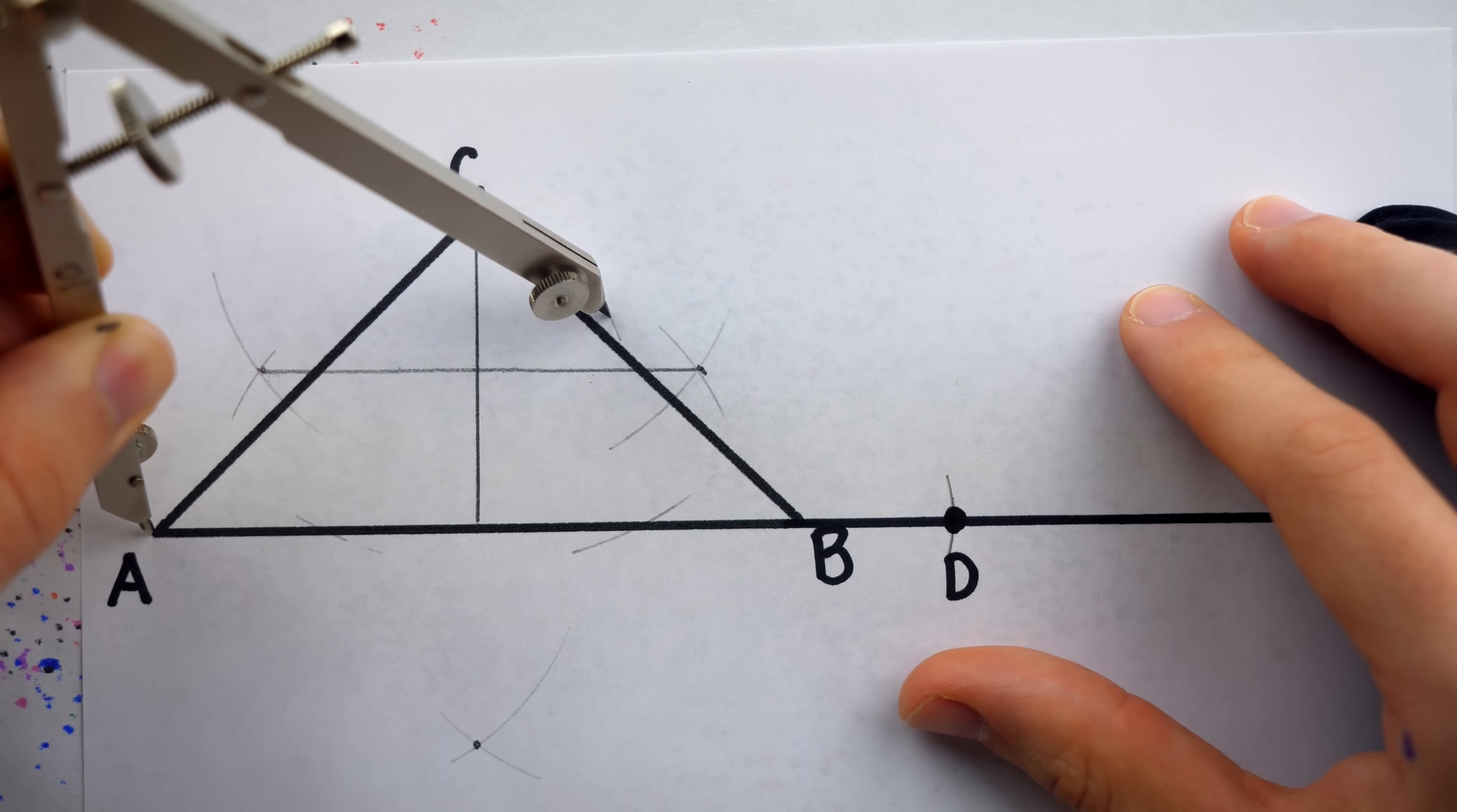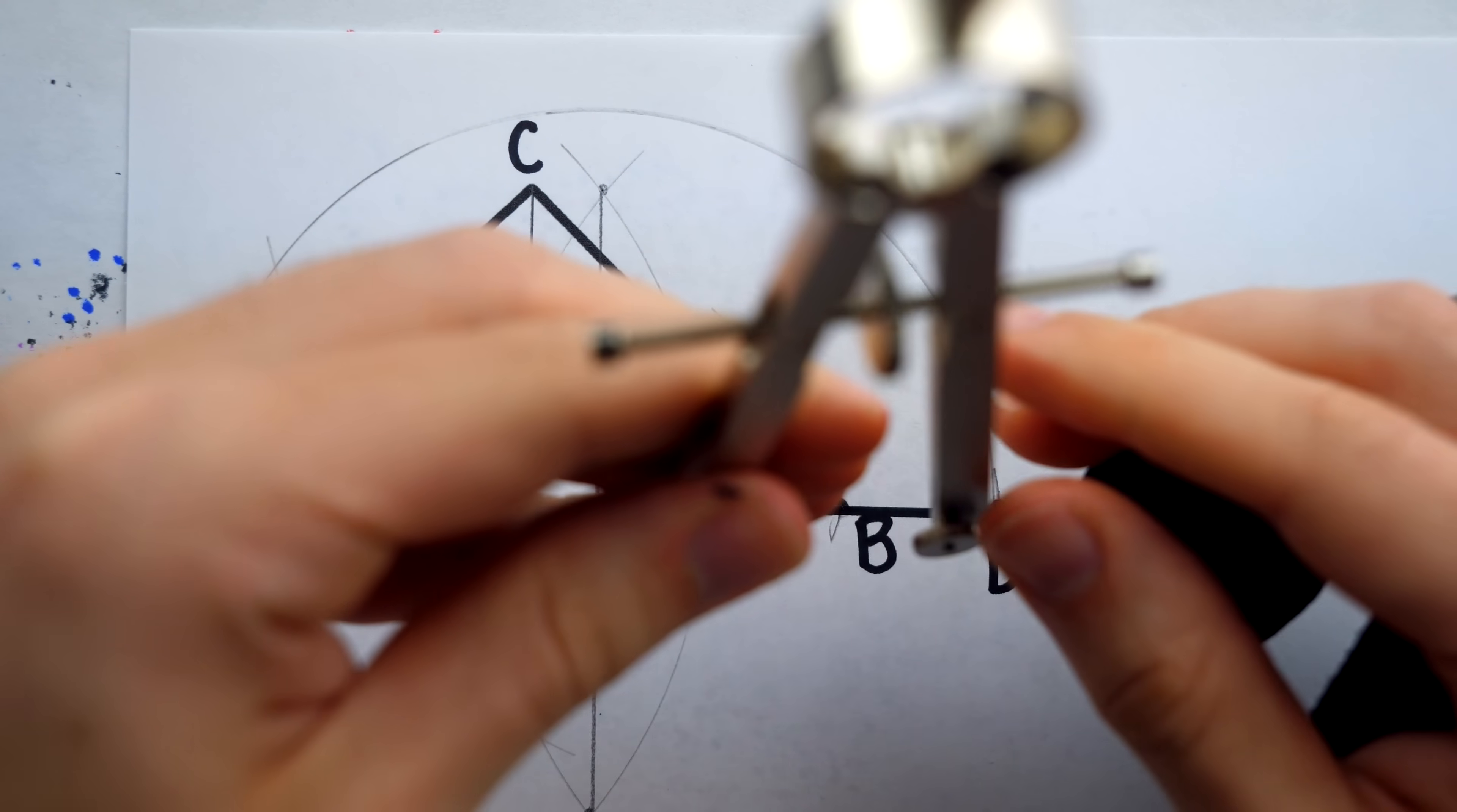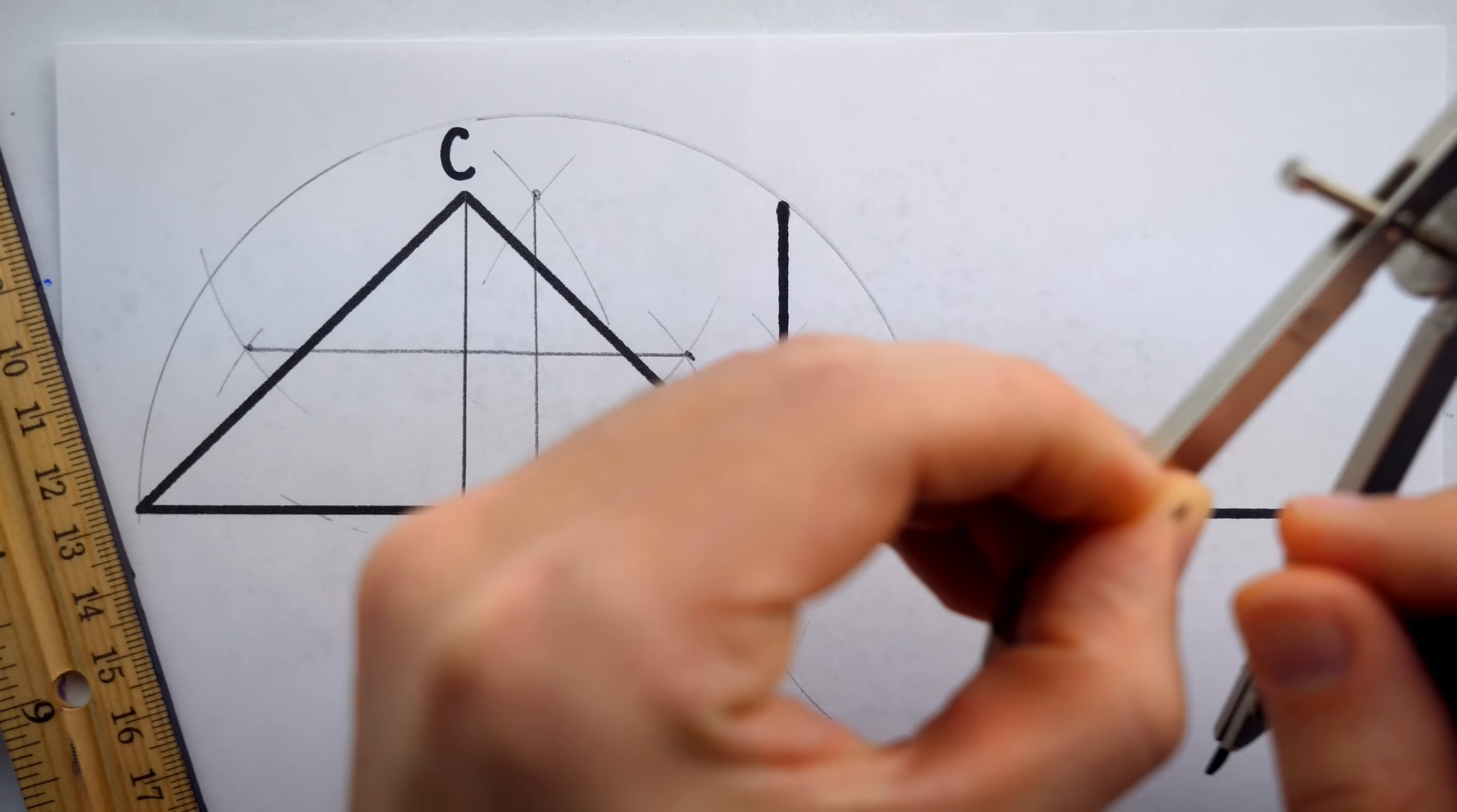Next, we construct the perpendicular bisector of the line segment AD. Now we can take half of the segment AD on our compass, and then construct the semicircle that has AD as its diameter. Then we construct a perpendicular line through the point B. Where this line intersects the semicircle we drew is the first side of our square. We can then take the side length of the square on our compass and mark a few more points to complete the square.